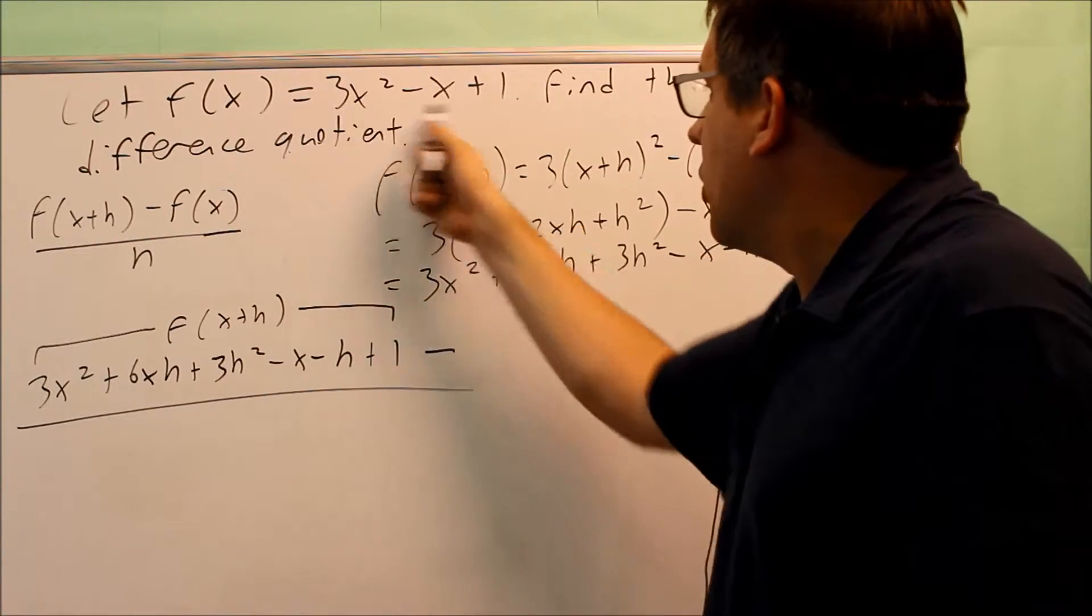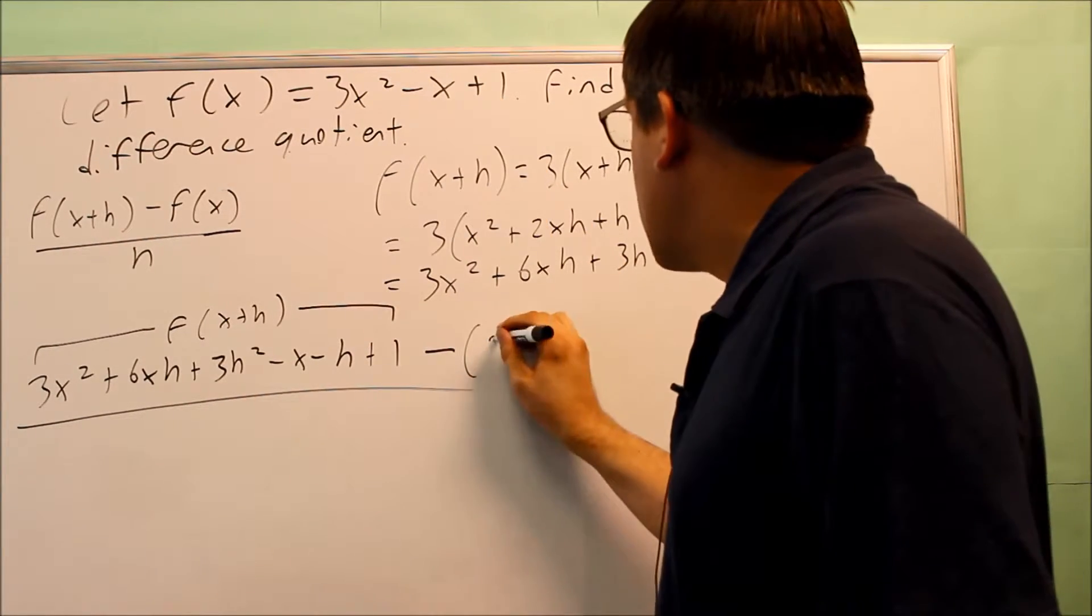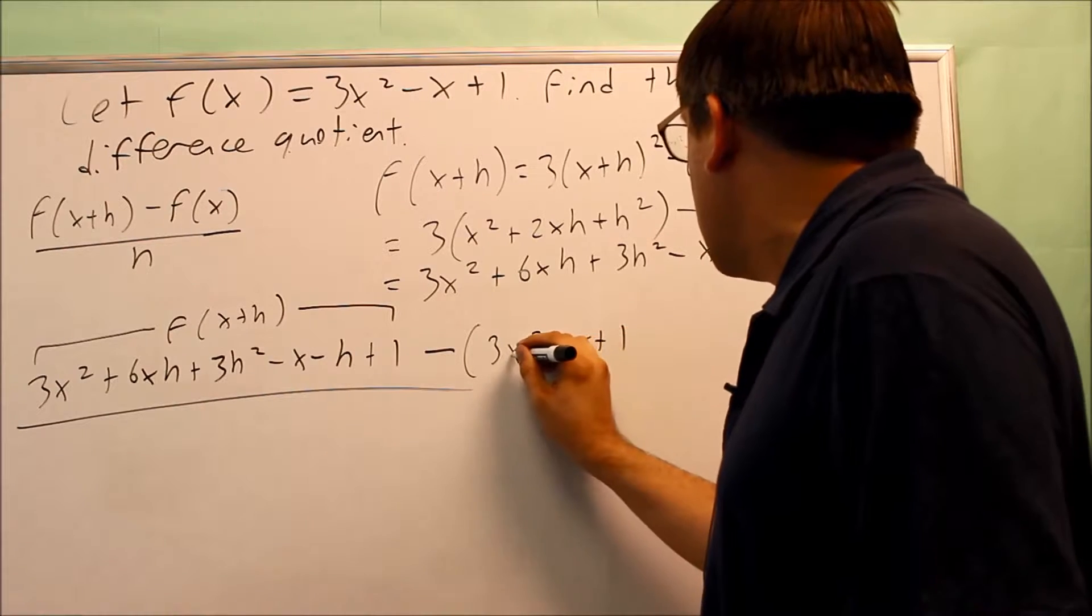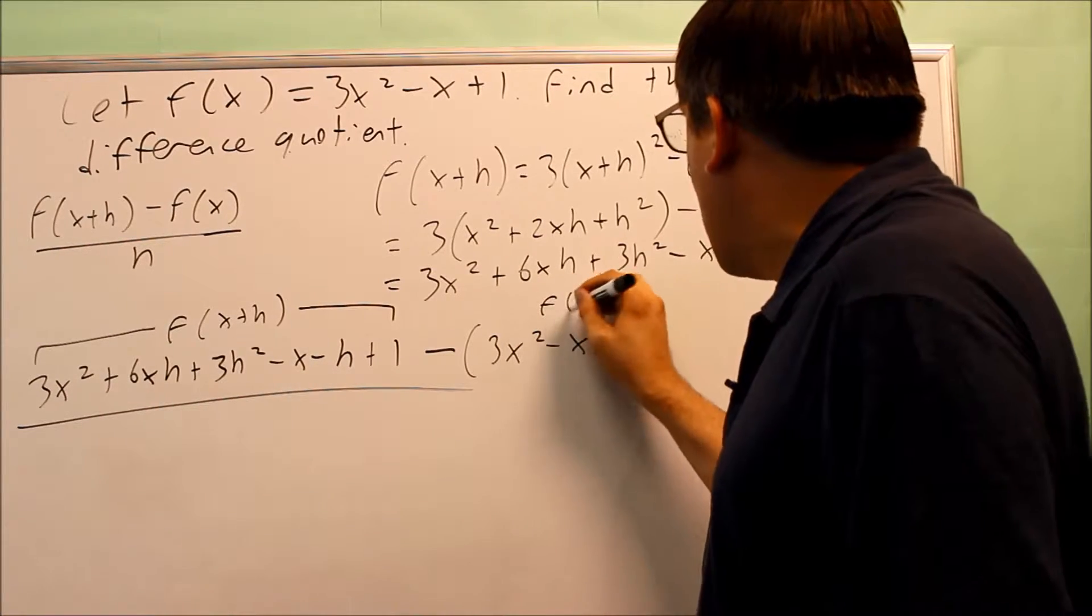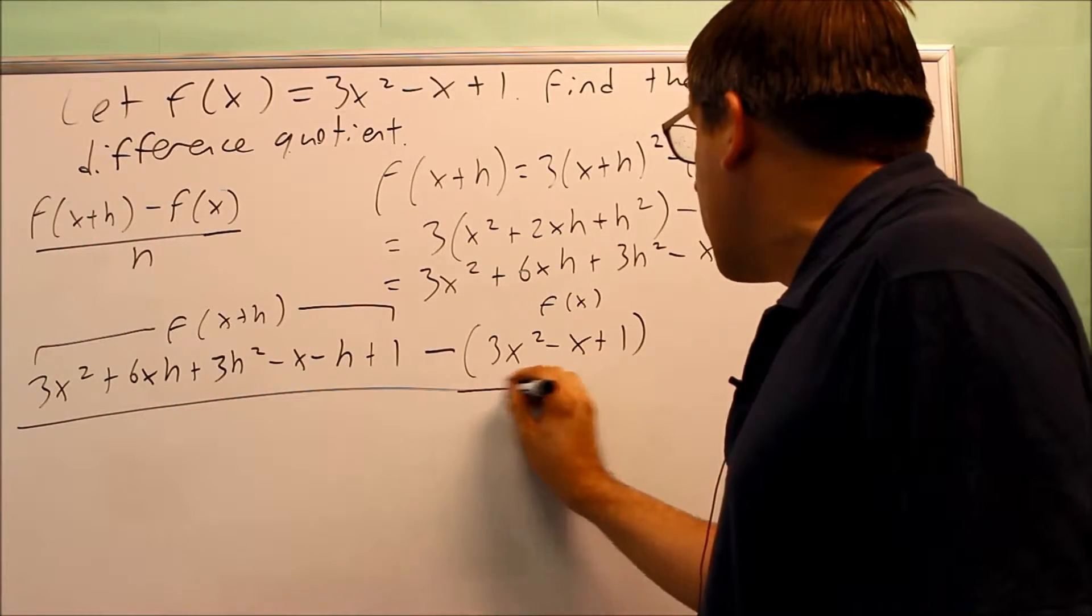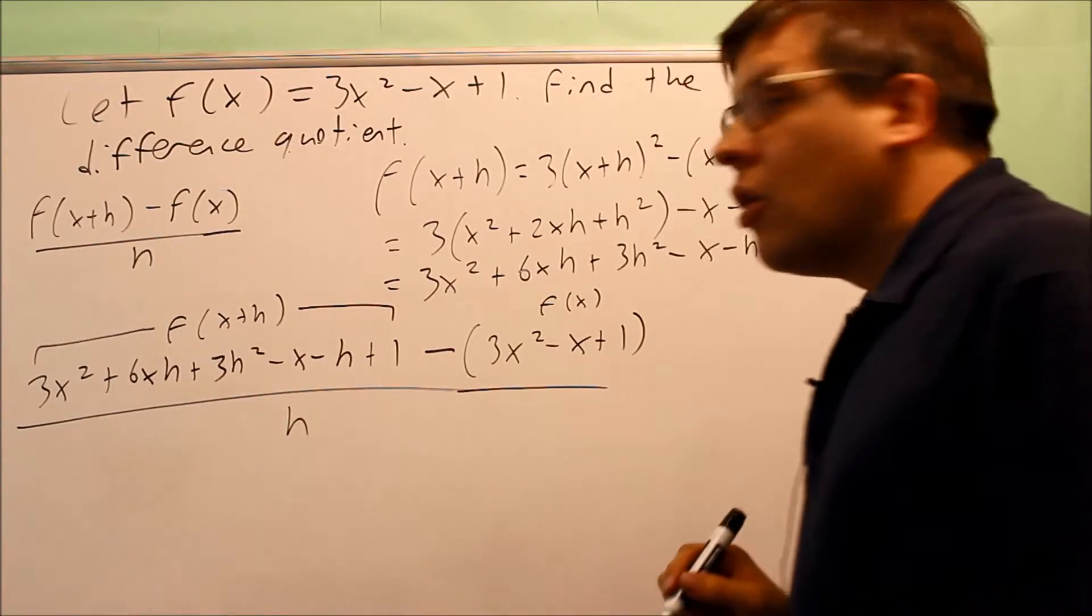Now f of x is your original one, that's 3x squared minus x plus 1. So now I have f of x right there. All this is going to be written over h.